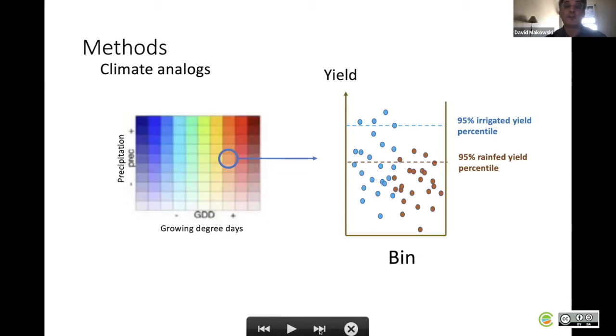The yield data were allocated to each bin based on the climate characteristics. Each bin corresponds to one specific range of growing degree day and precipitation. Two groups of yield data were distinguished.